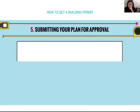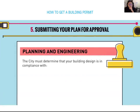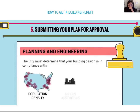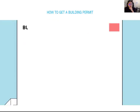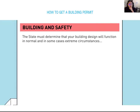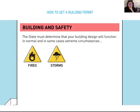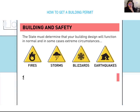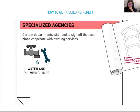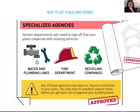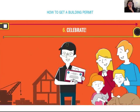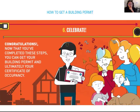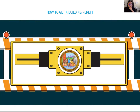Step five: submitting your plan for approval. The city must determine that your building is in compliance with population density, urban aesthetics, and zoning laws. The state must also determine that your building design will function in normal and extreme circumstances. Certain departments will need to sign off that your plans coordinate with existing services. Once you complete these steps, you can get your building permit and ultimately your certificate of occupancy.